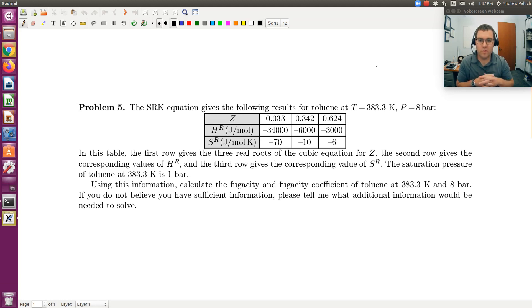It looks like we get three real roots, so we have Z, we get HR and SR for each. In this table, the first row gives the three real roots of the cubic equation for Z, the second gives the corresponding values of HR, and third gives the corresponding values of SR. The saturation pressure of toluene at 383.3 kelvin is 1 bar.